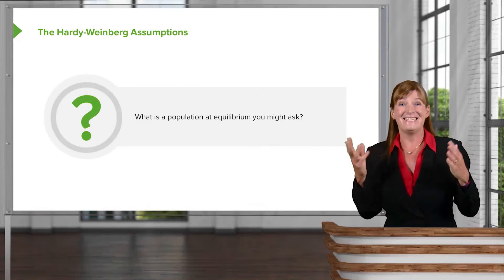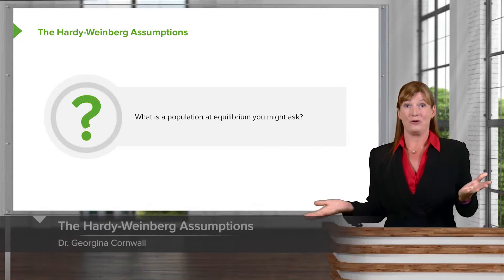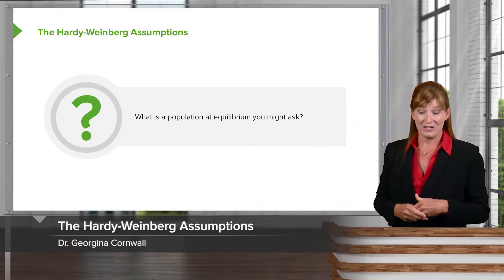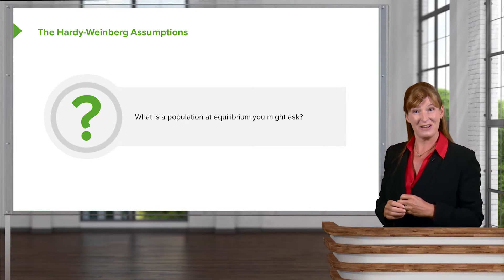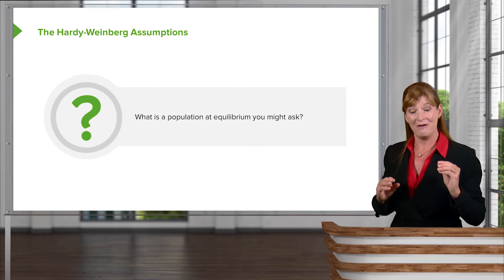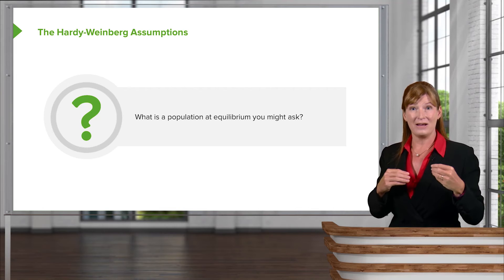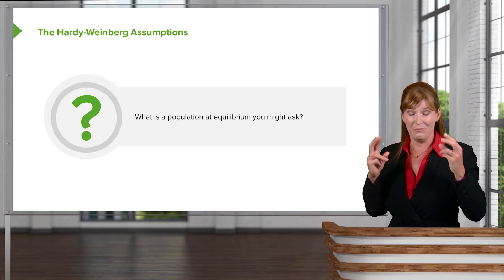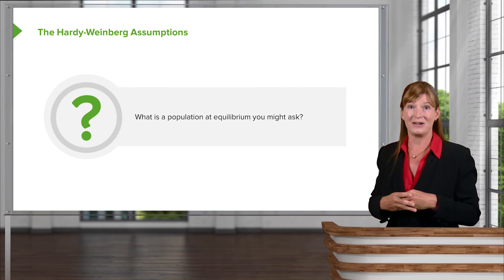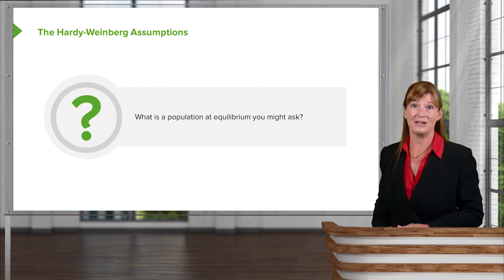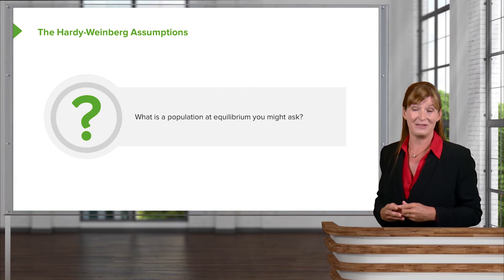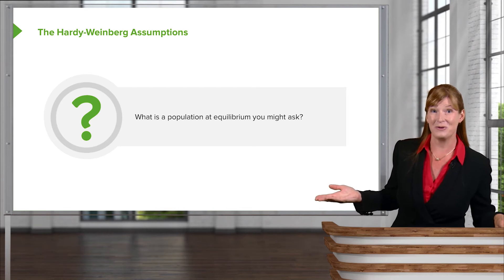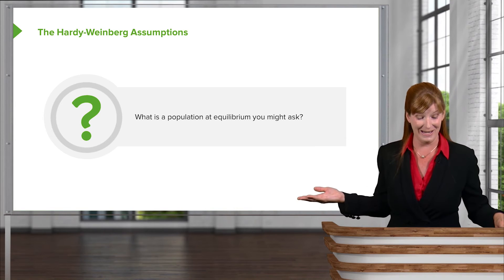What is this population at equilibrium thing all about? You may remember — see if you can for a moment — some of the Hardy-Weinberg equilibrium rules. What constitutes a population that is actually at equilibrium? Take a moment, think about that, and then I'll reveal them to you because of course I know them.